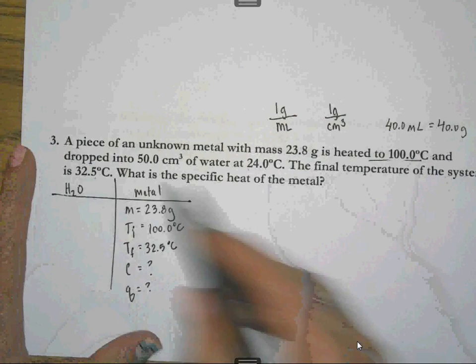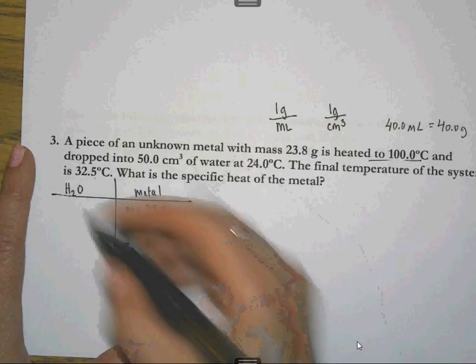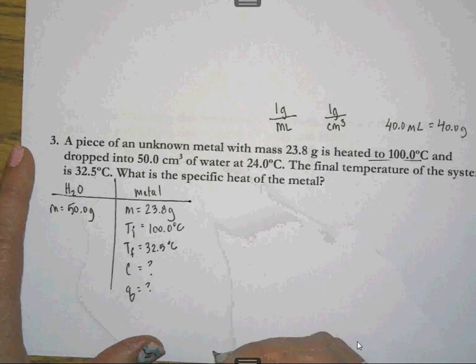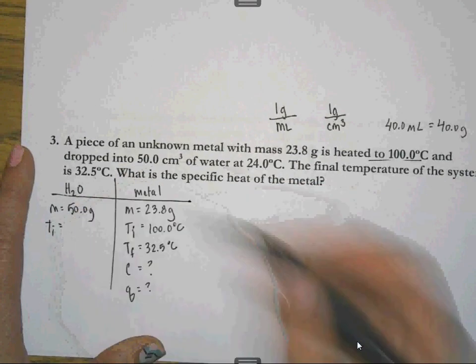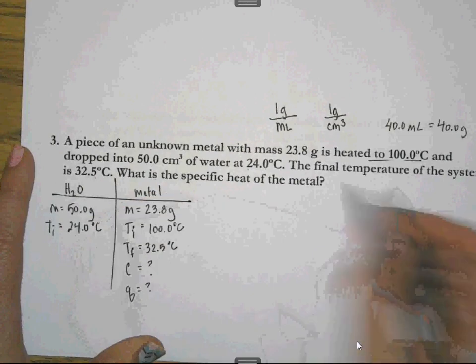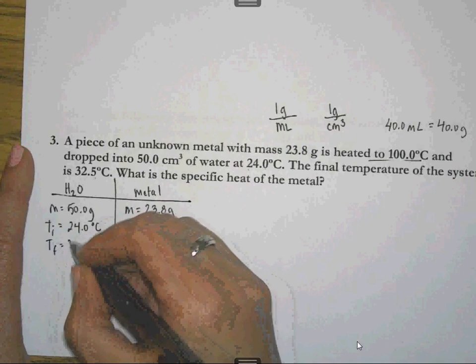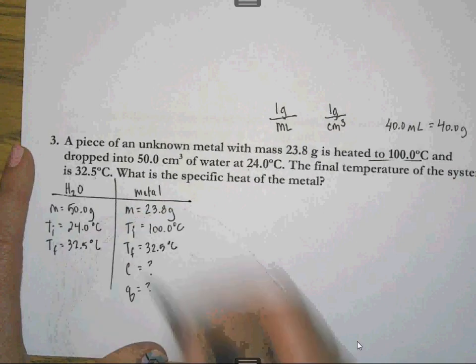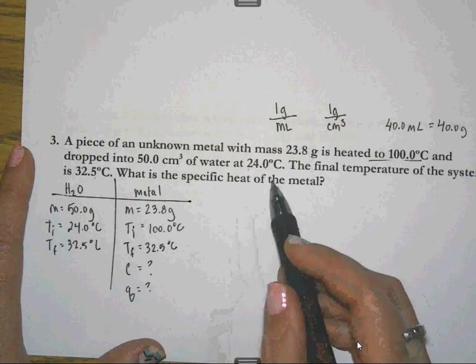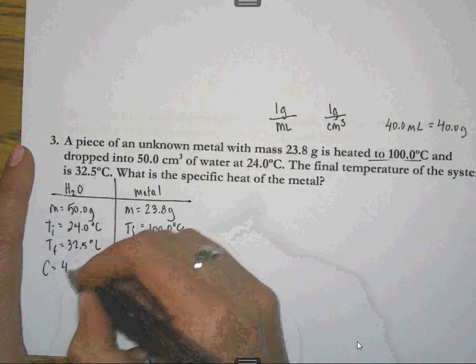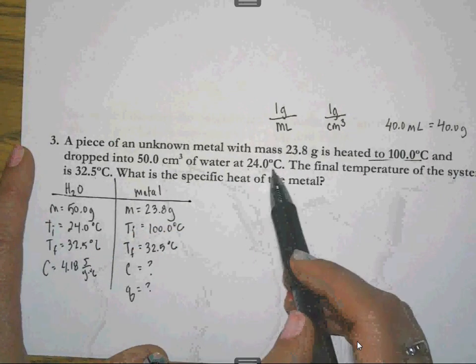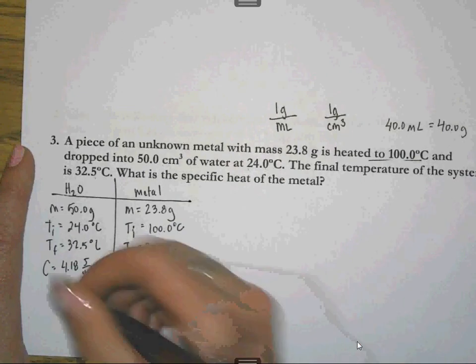Then for the water, there's 50 cubic centimeters of water, which means that the water then is going to have a mass of 50 grams and the water to start with its Ti is 24.0 degrees Celsius. If the temperature of the system ends up being 32.5, that's the final temperature of the water as well. Well, same way as last time. If I look at my reference table, I can find the specific heat of water and it's again a liquid because water at 24 degrees Celsius is well above the freezing point.